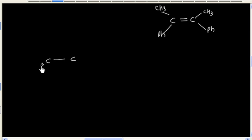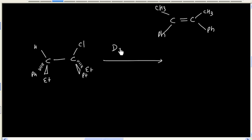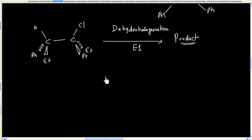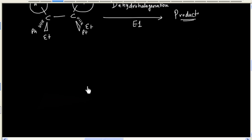Now let us say if I ask, what will be the product in this reaction? Once again we will have cis as well as trans product. We have to remove hydrogen and chlorine, that is dehydrohalogenation. Both products will be obtained.